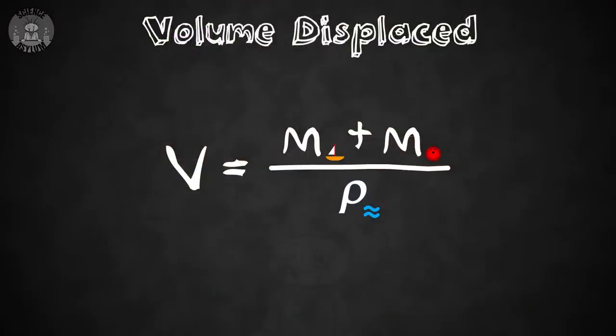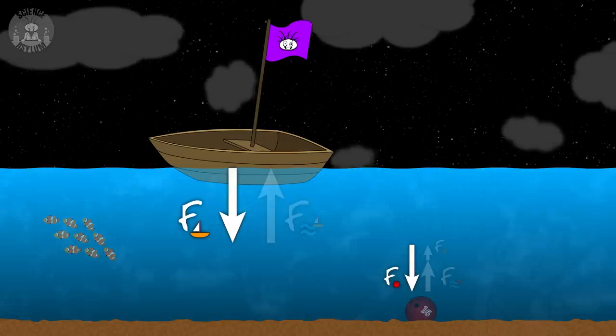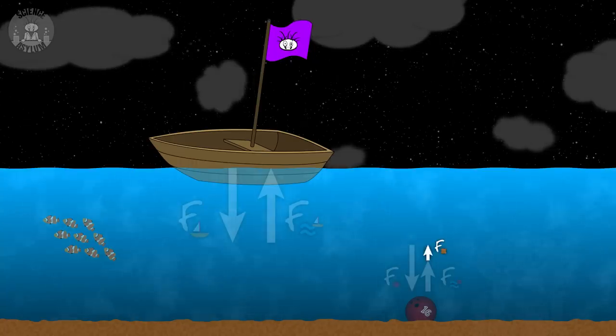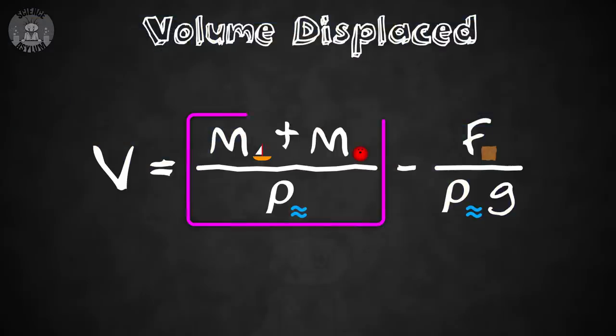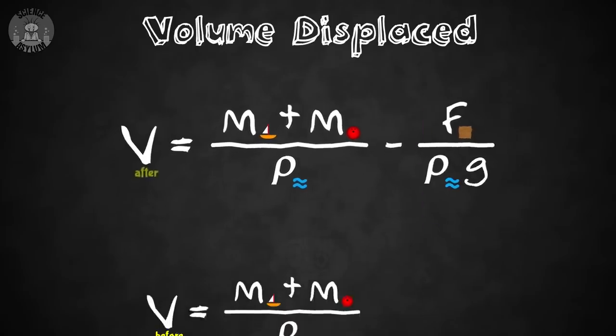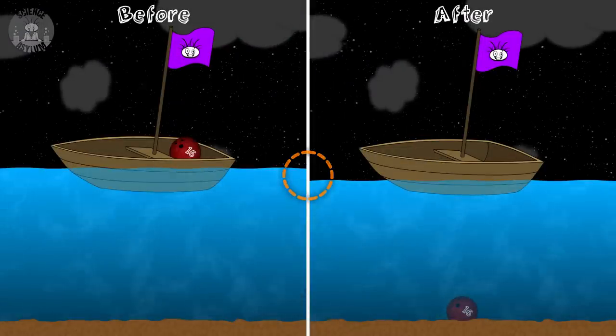We'll go the extra mile and solve for the displaced volume of water. You can see it depends on the mass of the boat, the mass of the ball, and the density of the water. This is what we're going to compare to our after picture. Once the ball falls all the way to the bottom of the lake, the water couldn't entirely support it — the water gave it a valiant effort with its buoyancy, but it just wasn't enough. This upward push from the lake floor makes up the difference. After you work through some algebra, the new displaced volume shows that the displaced volume after is less than the displaced volume before. The water level has gone down. Same conclusion, no tricks, just basic principles.